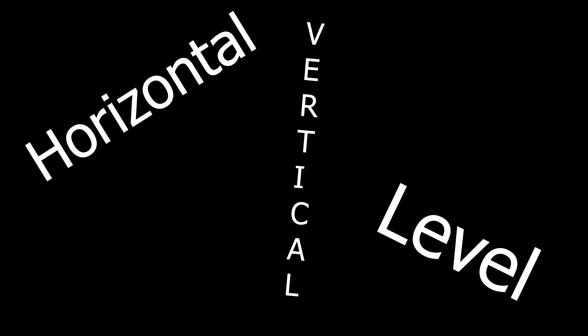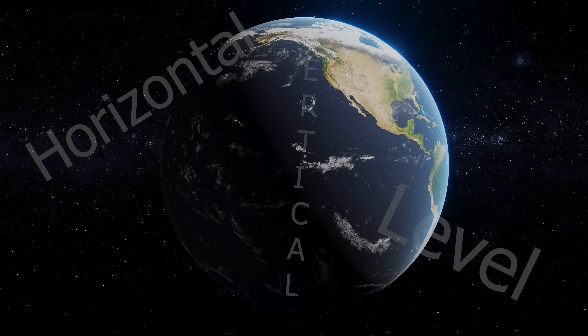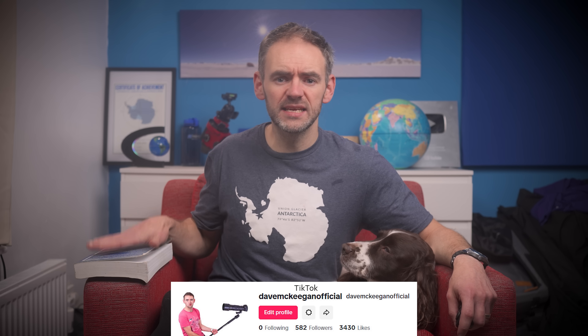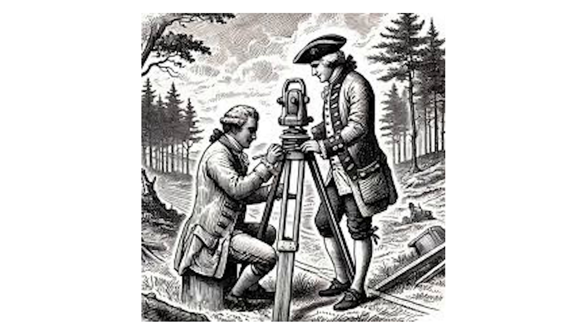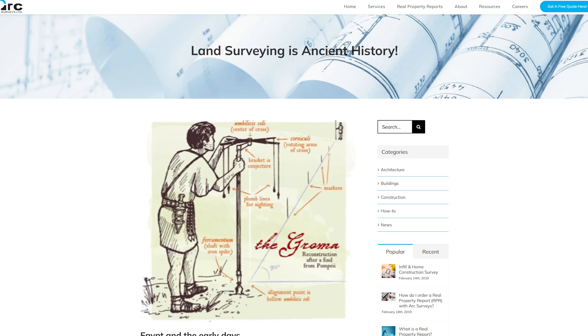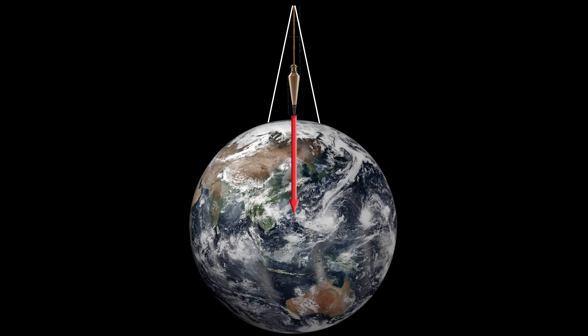The word level does not define the Earth — the term level is defined by the Earth. The terms horizontal, vertical, and level can absolutely fit with a globe. As highlighted in this book, vertical is the direction of gravity. For surveyors in the past, the first step for setting up their equipment was using a plumb bob to align their theodolite with vertical, and vertical absolutely can work on a globe.